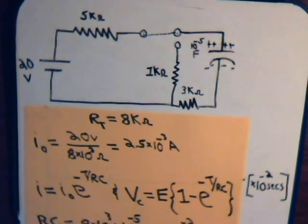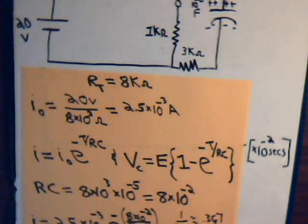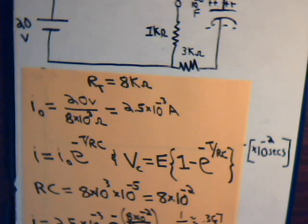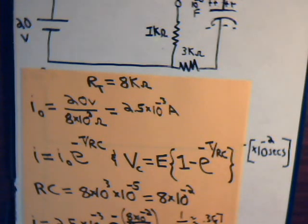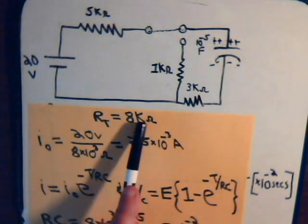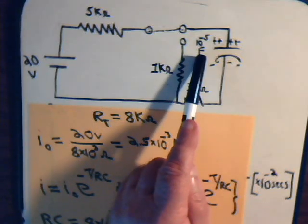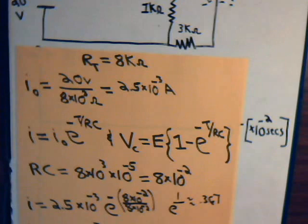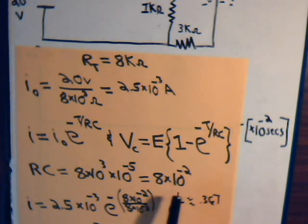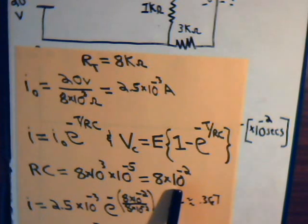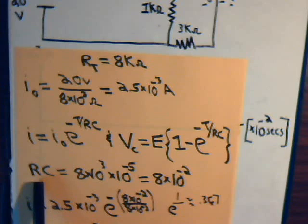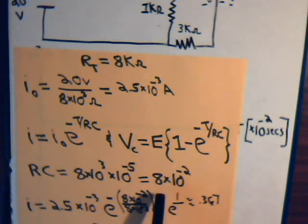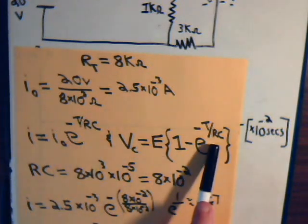In previous videos we derived equations for the charging current and for the charging voltage on the capacitor. Both equations have resistance times capacitance in the denominator. For our circuit, the resistance is 8 kilo-ohms and capacitance is 10 to the minus 5, so RC equals 8 times 10 to the minus 2. This is called the time constant — we'll discuss that more in the next video — and it appears in the denominator of both expressions.